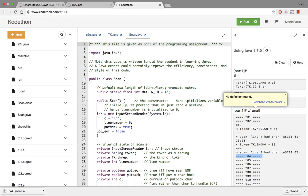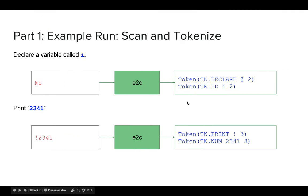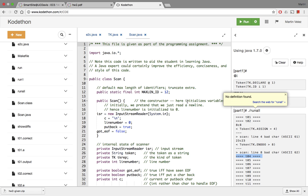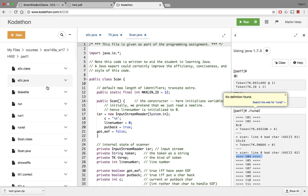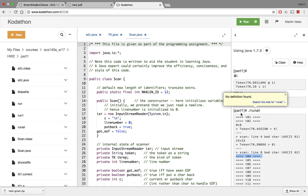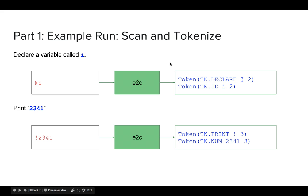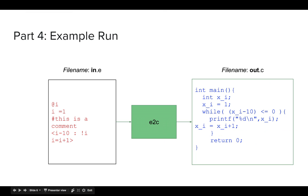That's pretty much all I want to say about part one. I've shown you how to import homework 2 into Codetown, how to run it, and how to test your code. For part 4, eventually you'll have an input program in E passed to e2c, and the output will actually be a C program. But you'll get to that part eventually. Ask questions in discussion and on Piazza.